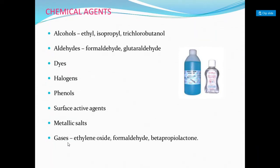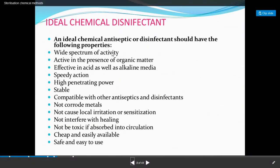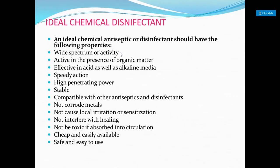Before selecting a particular chemical as a disinfectant or sterilizing agent, that chemical must possess certain properties. Having those properties determines whether a chemical is ideal for sterilization. The first property is wide spectrum activity — whatever chemical we use for sterilizing purposes must be effective against a large number of microorganisms.